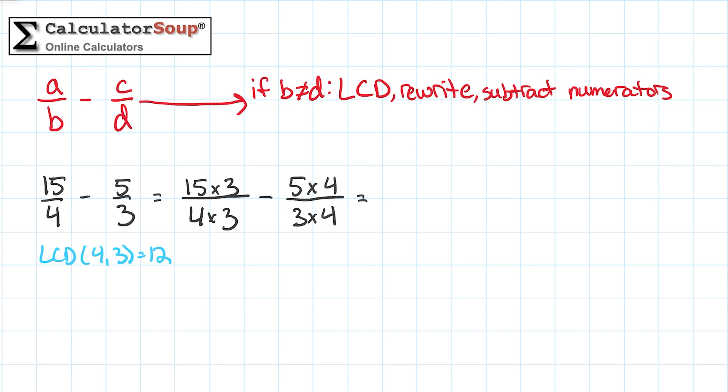15 times 3 is 45, and 4 times 3 is 12. 5 times 4 is 20, and 3 times 4 is 12. So our new equation is 45 twelfths minus 20 twelfths.